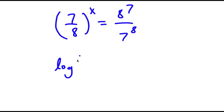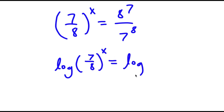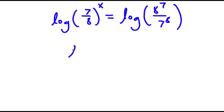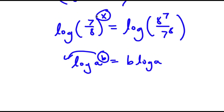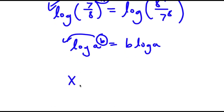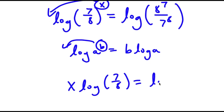Now I'm going to take the log on both sides. So now I have log of 7 over 8 to the power of x is equal to log of 8 to the power of 7 over 7 to the power of 8. If I have something in the form log a to the power of b, I can move the exponent b to the front. So log of 7 over 8 to the power of x, I can move x to the front. So now I have x times log of 7 over 8 is equal to log of 8 to the power of 7 over 7 to the power of 8.